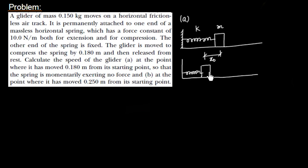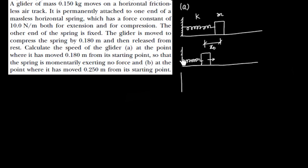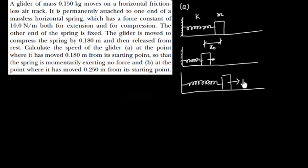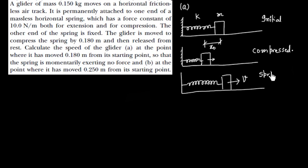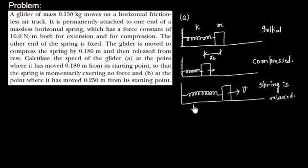Once you compress the spring and release the block, the block will move forward and finally return to the initial position, where it will have some velocity. The initial position is the compressed position. At the natural length, the spring is relaxed but the mass has a velocity — that is what we need to calculate. Since there is no friction on the surface, this is frictionless, and we can apply energy conservation.